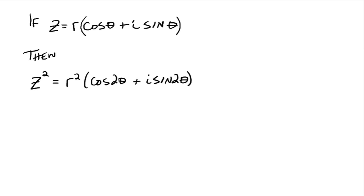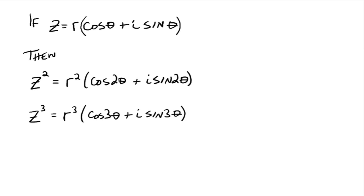Suppose we have Z equals R times cosine theta plus i sine theta. Then to find Z squared, which is just Z times Z, we would get R squared times the cosine of theta plus theta, which goes to two theta, plus i sine two theta. So Z cubed, which is Z squared times Z, gives us R cubed times the cosine of three theta plus i sine three theta. And Z to the fourth would be R to the fourth cosine four theta plus i sine four theta, and so forth.